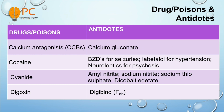And for cocaine overdose, we can use benzodiazepines for seizure, labetalol for hypertension, and neuroleptics for psychosis, based on their side effects. And for cyanide poisoning, we can use amyl nitrite, sodium nitrite, sodium thiosulfate, or dicobalt edetate as antidote.